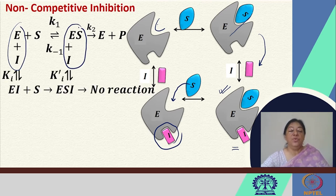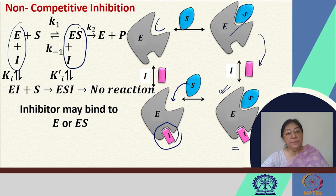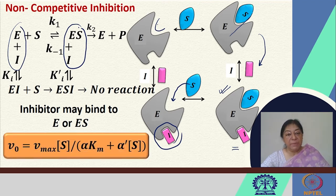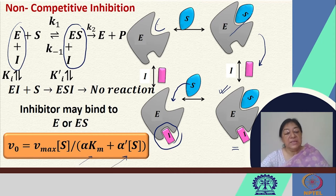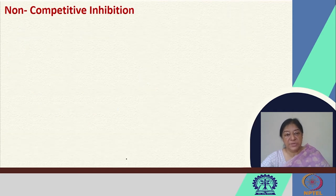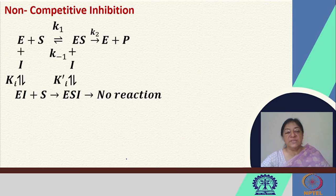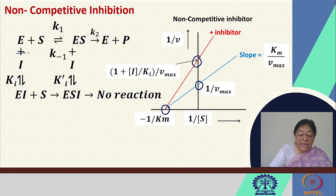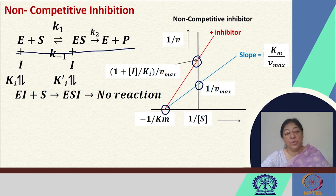In the ternary complex of non-competitive inhibition, there is no product formation. The inhibitor, because it does not bind to the active site, may bind to either the free enzyme or the enzyme-substrate complex, since the inhibitor binding site is free in both cases. We again have modified Michaelis-Menten kinetics, where we have both a modified alpha·KM and an alpha-prime factor for the substrate concentration. In the Lineweaver-Burk plot, the Vmax is different from the uninhibited case, but the KM value remains the same, indicating any available enzyme would proceed to form product.